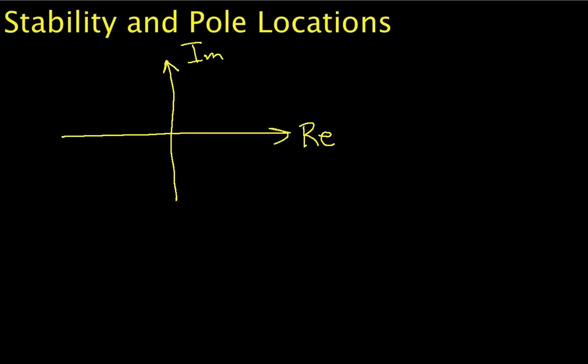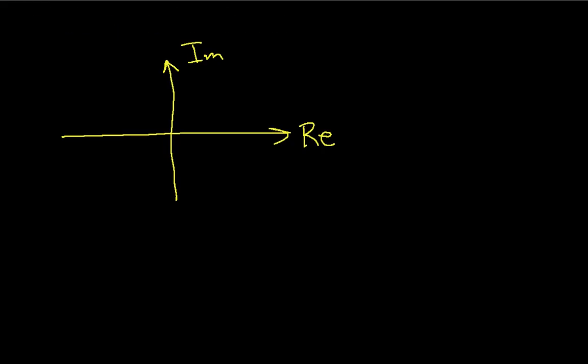In this video, we will discuss how we can determine whether or not a system is stable by looking at the pole locations of the transfer function h of s.